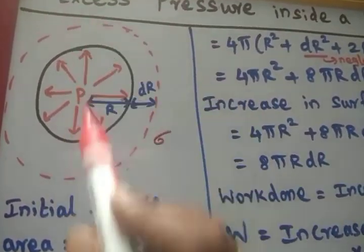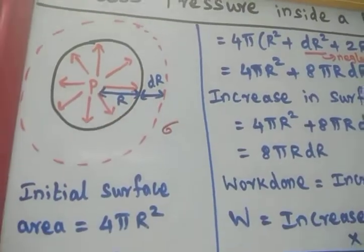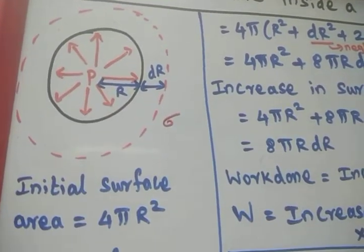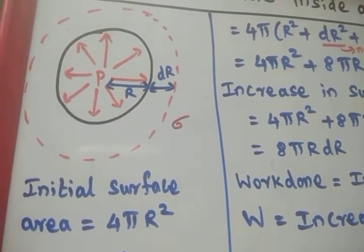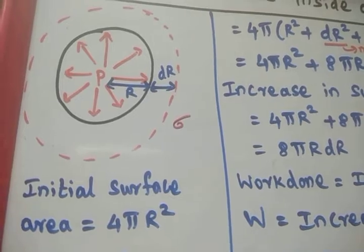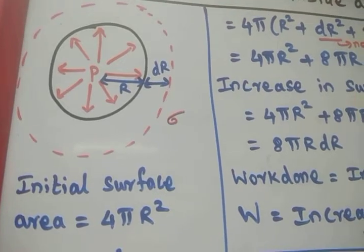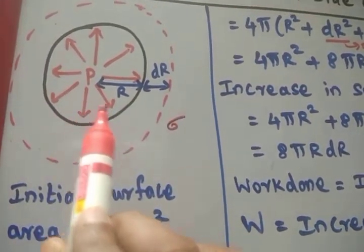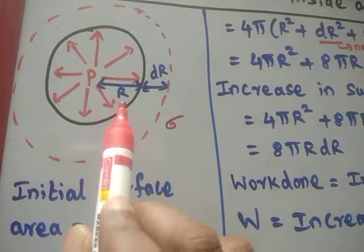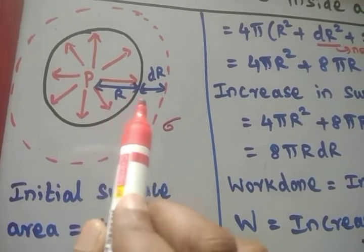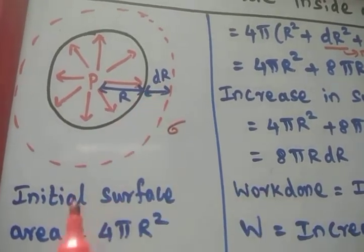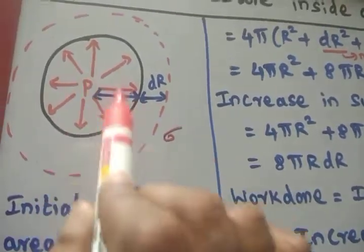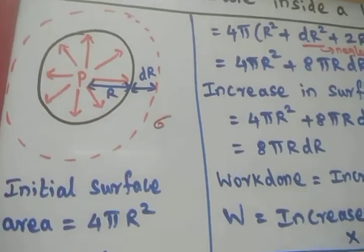The force due to this excess pressure will be moving outwards. This excess pressure normally acts outwards. Let us consider that the radius of the drop is increased by the distance dr due to this excess pressure.